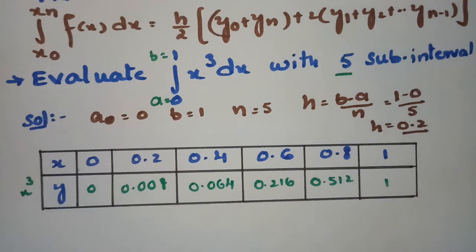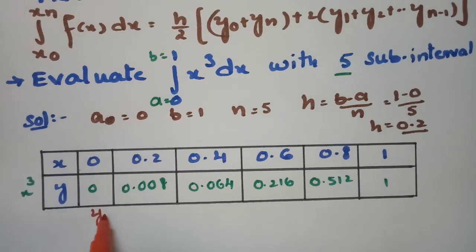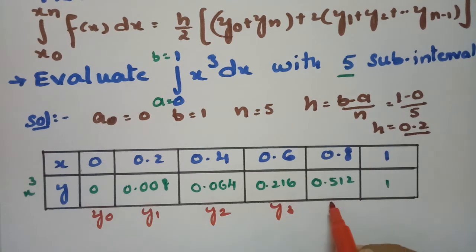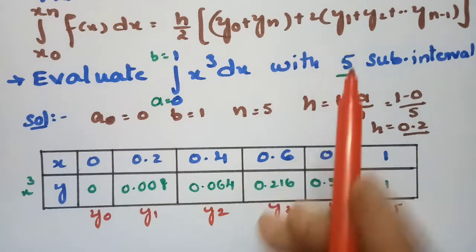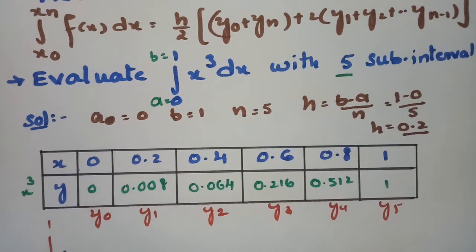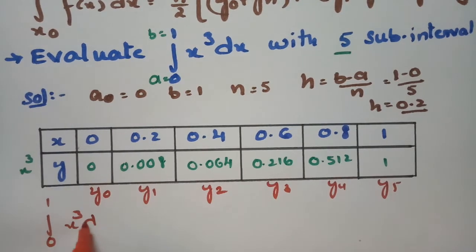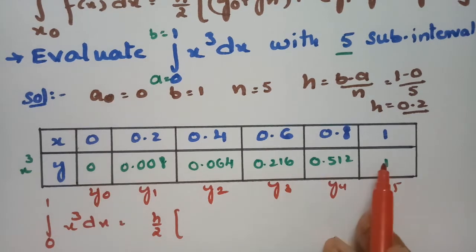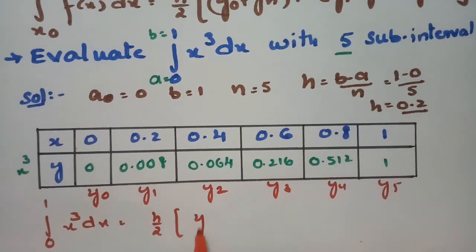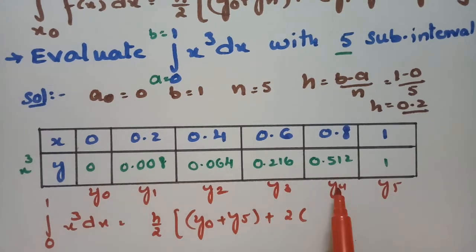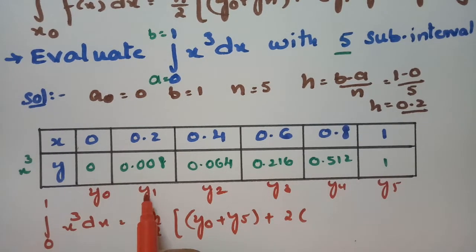After getting all these values we name them: y0 = 0, y1 = 0.008, y2 = 0.064, y3 = 0.216, y4 = 0.512, and y5 = 1. According to the trapezoidal rule, the integral from 0 to 1 of x³ dx equals h/2 times (y0 + y5) plus 2 times the remaining ordinates y1, y2, y3, and y4.